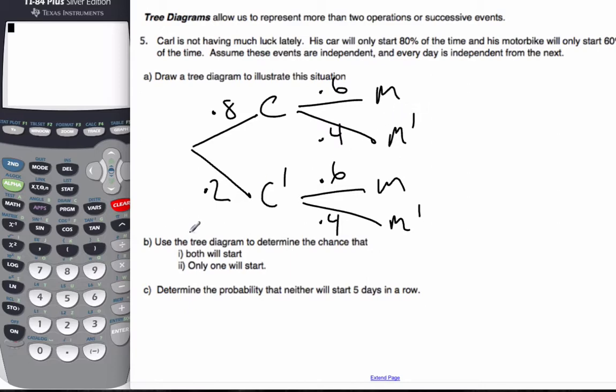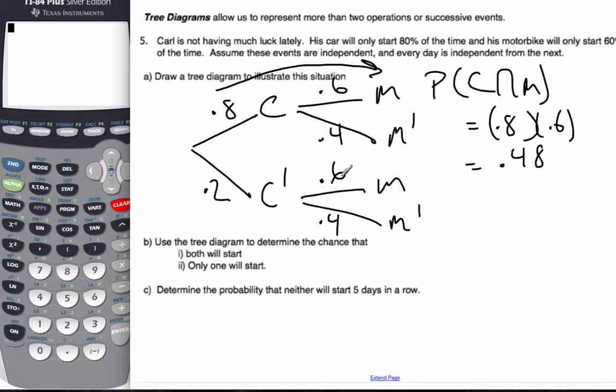So use a tree diagram to determine the chance that both will start. Well, that's this branch of the tree diagram. And the notation for this is the probability of the car and the motorcycle starting, which is 0.8 times 0.6. This will be 0.48. When I go this way down the tree, I multiply.